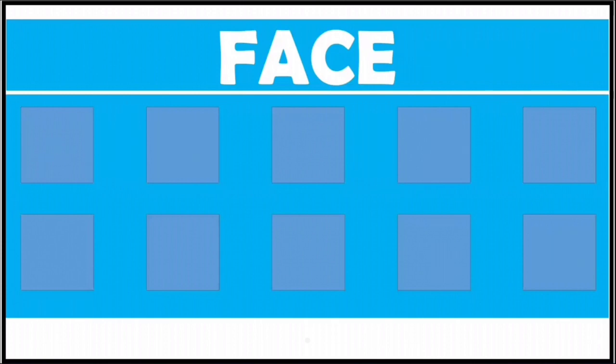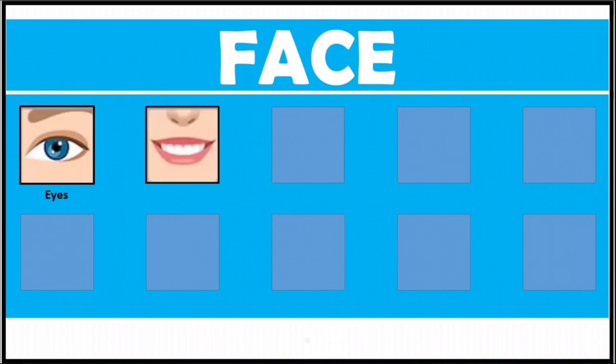First one is eyes. We have a pair of eyes. Second one, teeth. We have many teeth in our mouth. Third one is forehead. This is the part which lies between your head and your eyebrows.